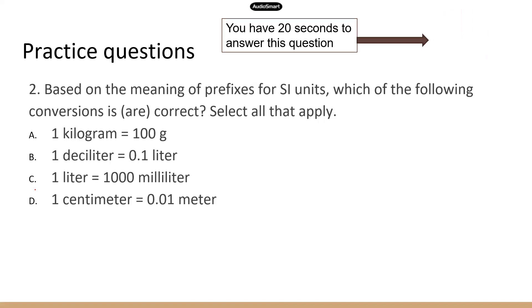So I wrote this question for that new learning objective, specifically about unit conversion. So there will be multiple correct answers. Let's look at A. One kilogram. So kilo means 1,000. So one kilogram equals 1,000 grams. So A is not correct.